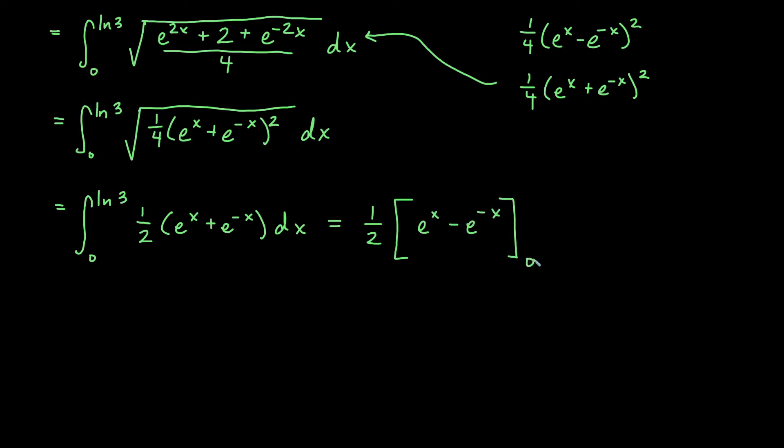And then our bounds are x-bounds, so we just use from 0 to ln of 3. And we'll go ahead and evaluate that. So our length is going to be 1 half, and we have e to the ln3 minus e to the negative ln3. Some of you might want to simplify that as you write it down. I'm going to leave it so I don't lose anybody. And then plugging in 0, I get e to the 0 minus e to the negative 0 is still 0 for the exponent.